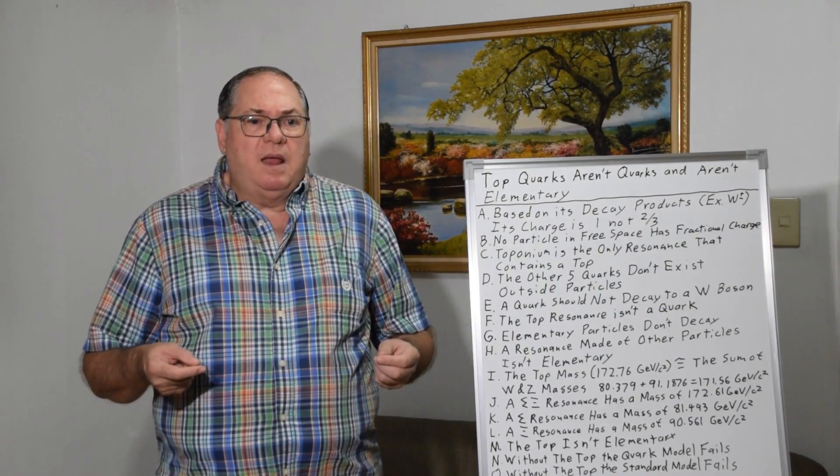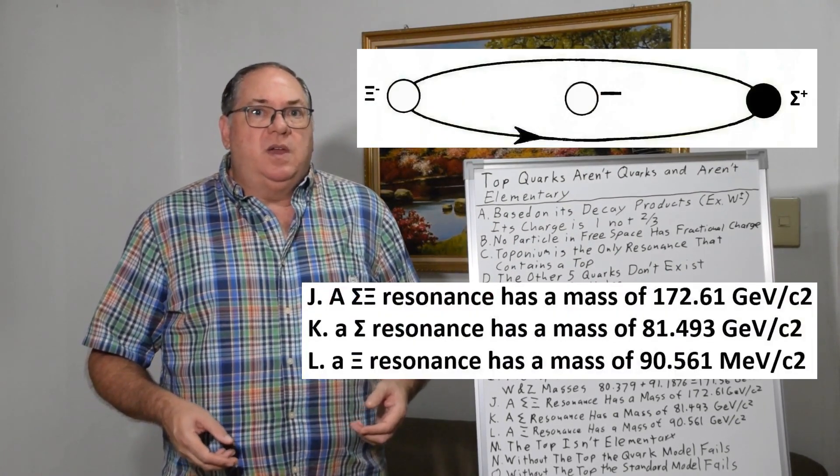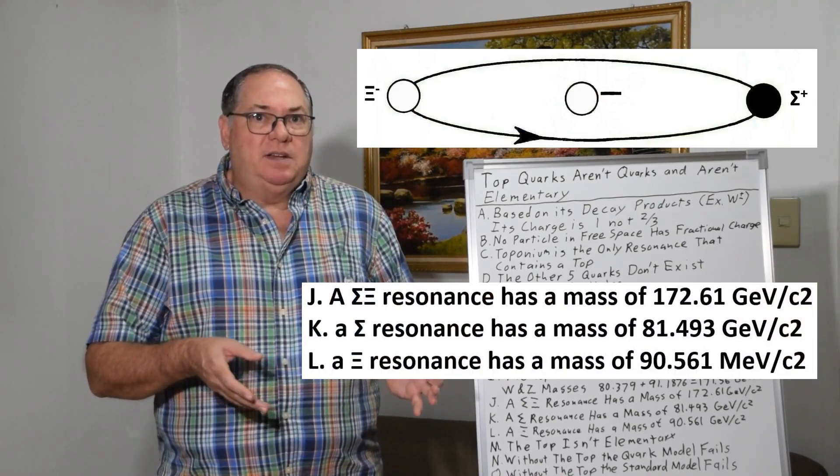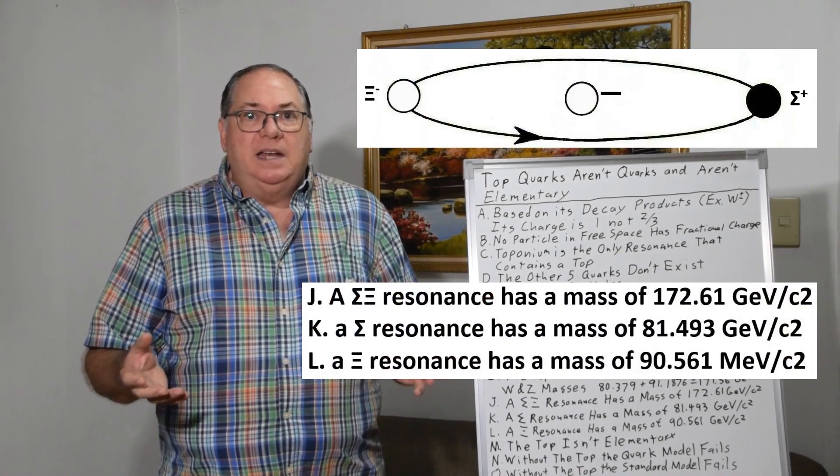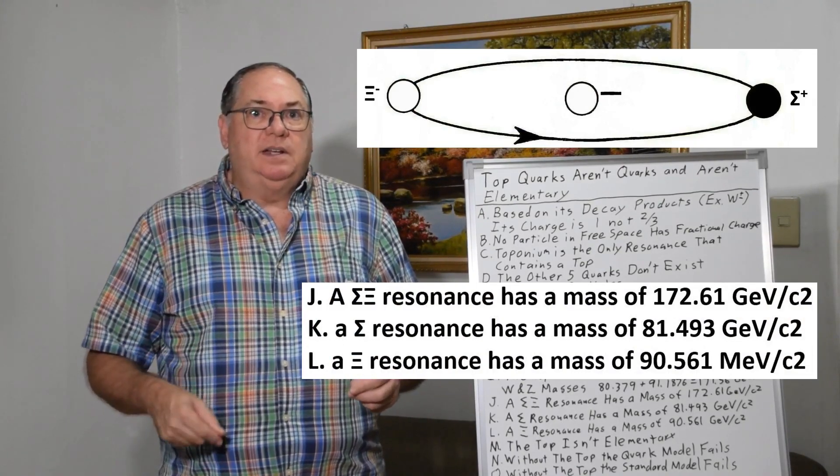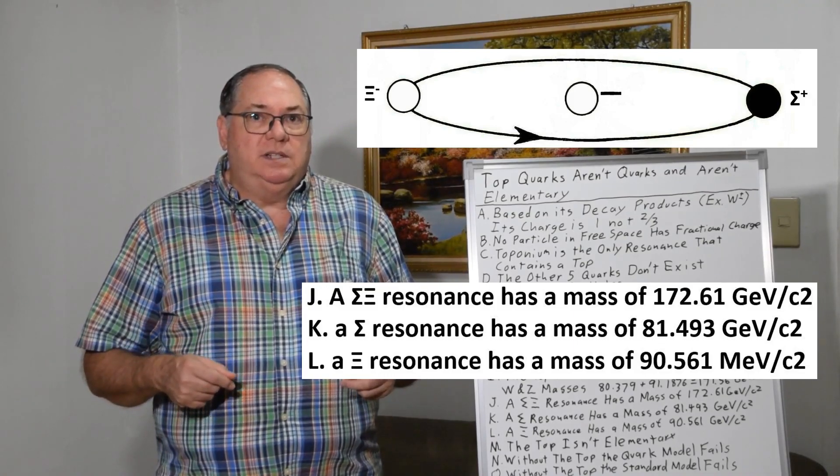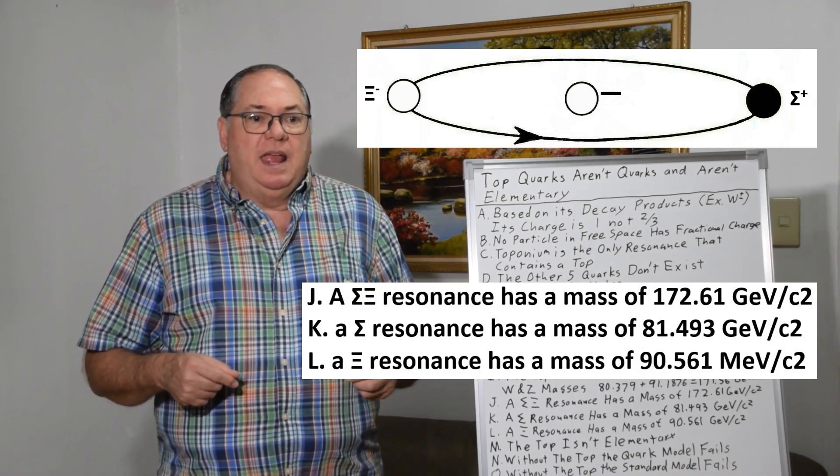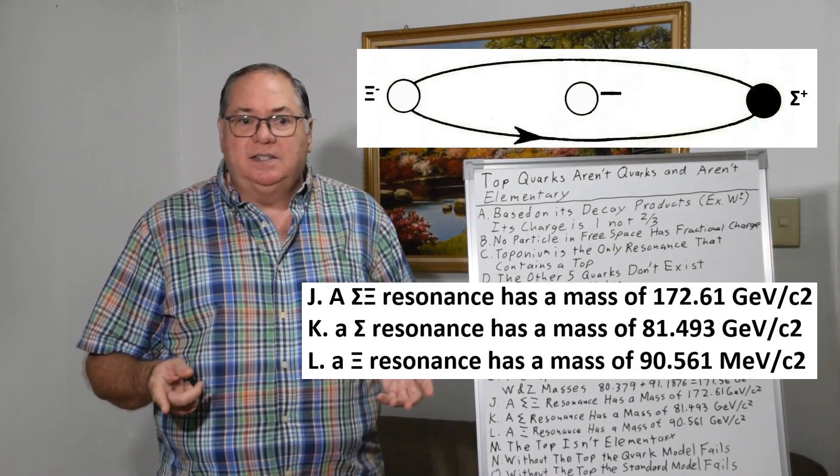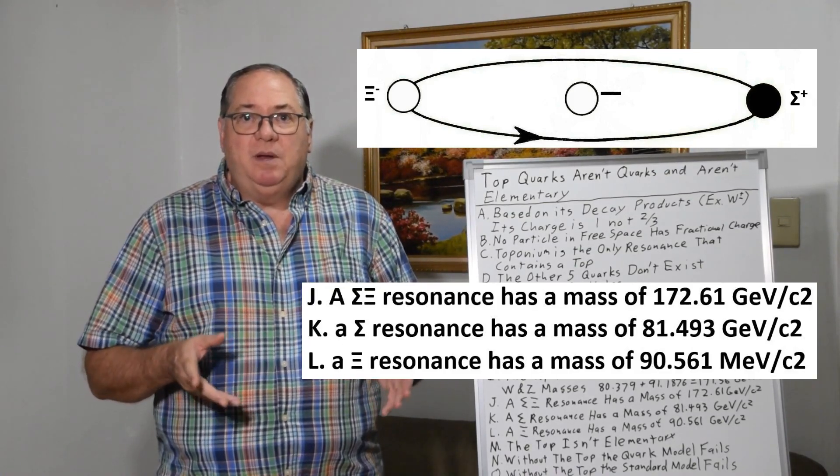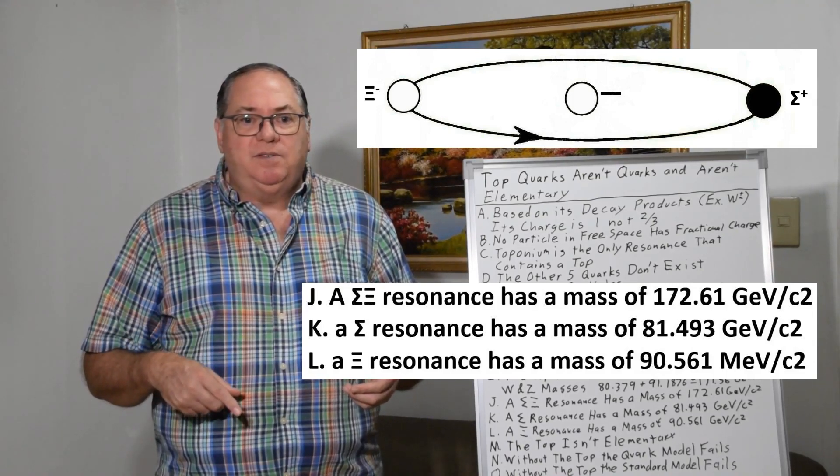So we can also look at a relativistic onium orbit where you can determine the mass of a relativistic particle in orbit by dividing it by two times the fine structure constant, and that gives you its relativistic mass energy. And if you take a sigma xi resonance, sum their masses and divide by two times the fine structure constant, you get 172.61.